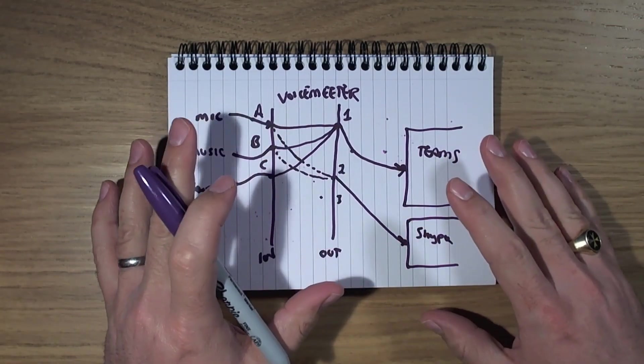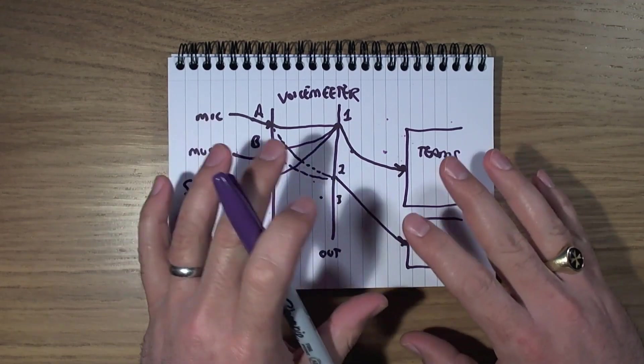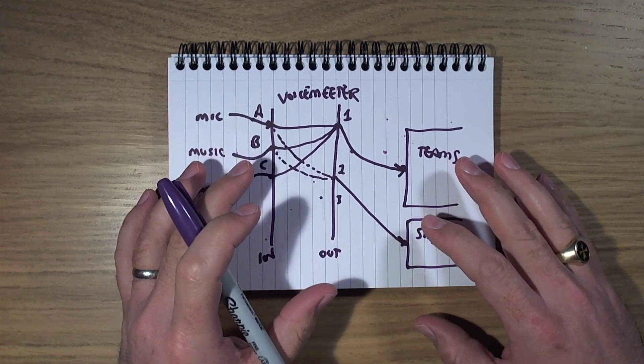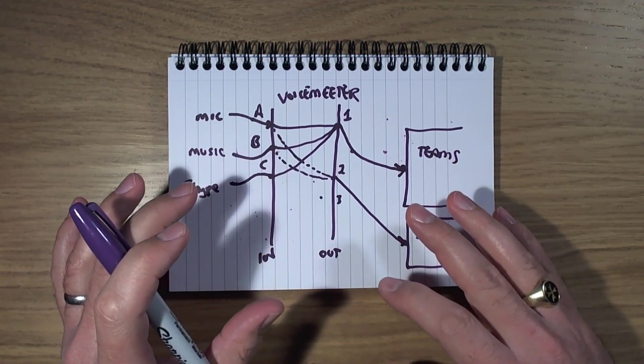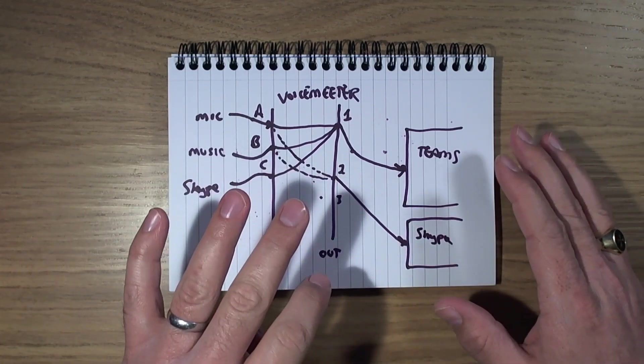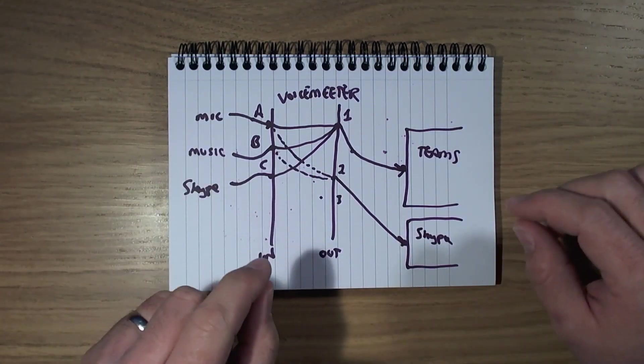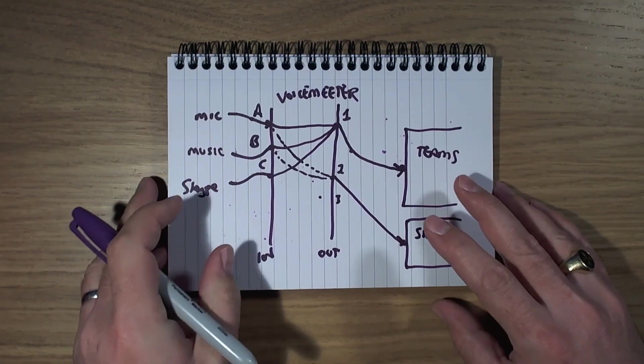But the problem with doing it all in software is that when you're running the meeting itself, that can obviously be quite cumbersome then to switch between application windows, control what output's going where, fade up the levels and all those sorts of things. So what you can buy to make that a little bit easier, I'll just pop my notepad over there out of the way, is a device like this.